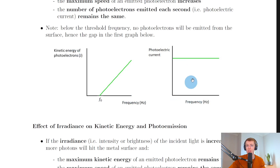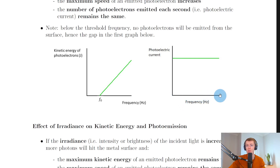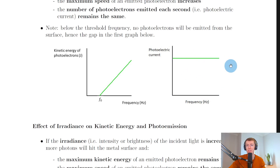We also have a graph showing what happens to the photoelectric current against frequency. As the frequency of the incident photons increases, the photoelectric current — i.e. the number of photoelectrons emitted from the surface each second — stays the same. It's worth remembering these three important results.